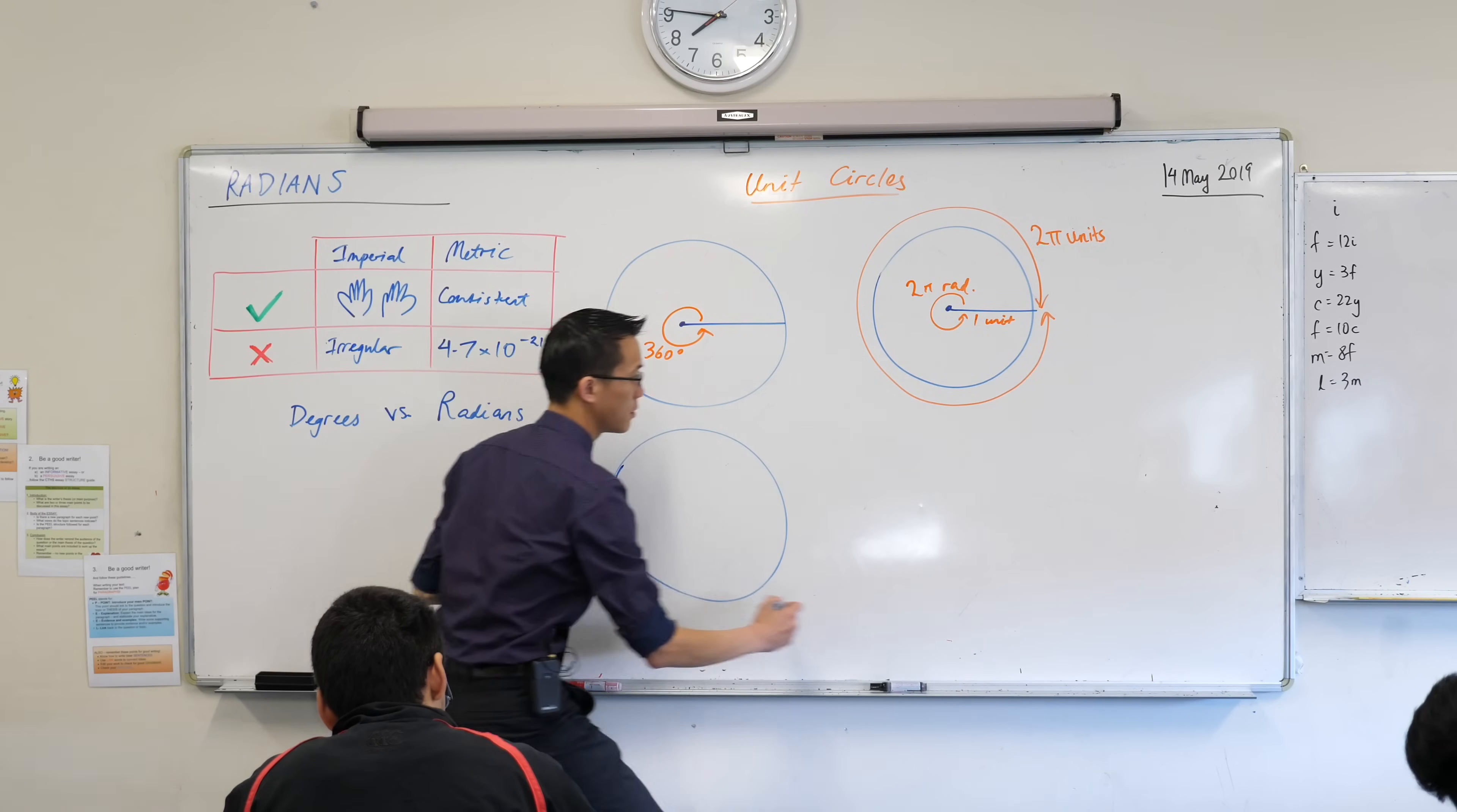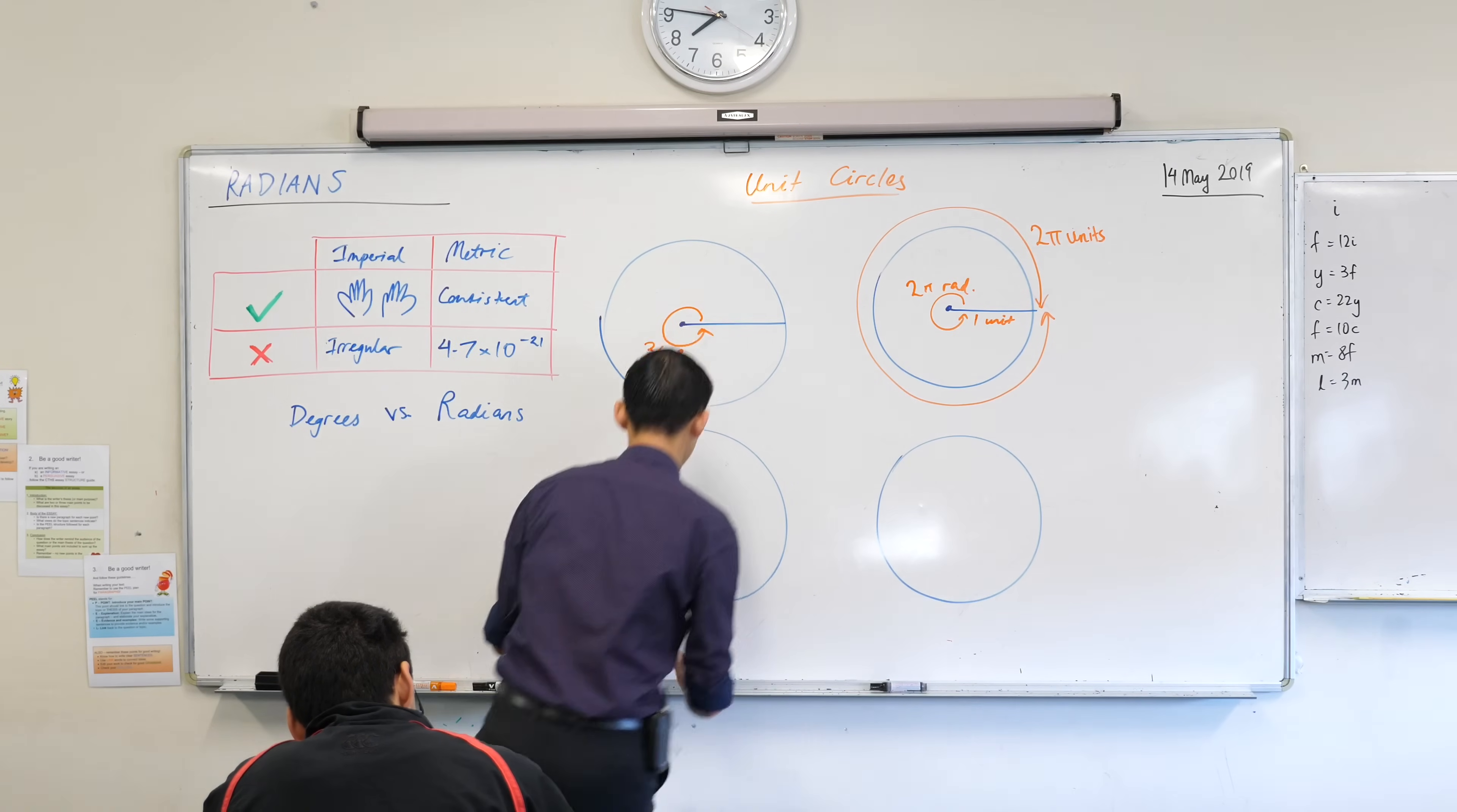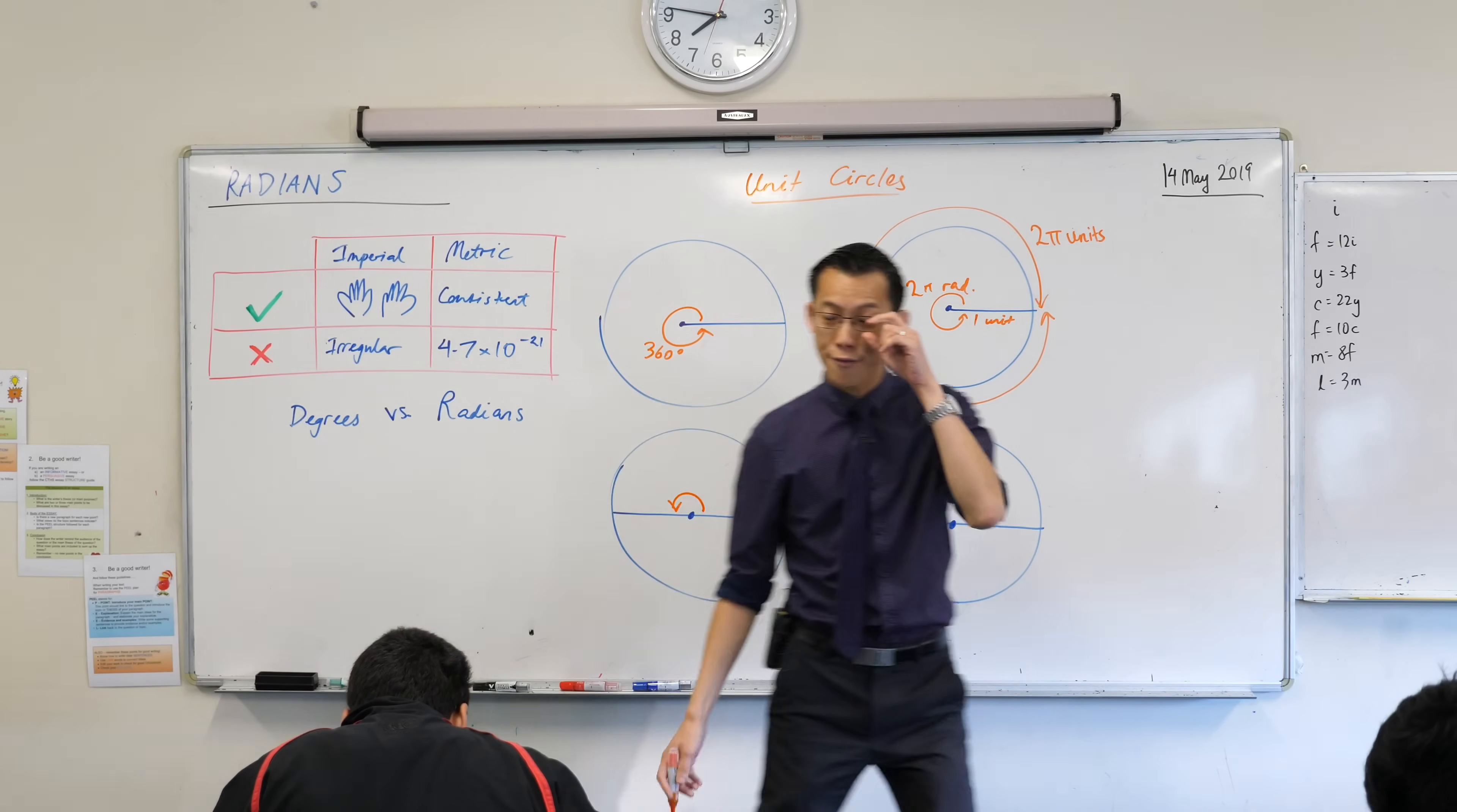Okay, so on this next circle, what I'd like you to draw is not 360 degrees. Can you draw for me an angle that is half a revolution? Can you go ahead and draw that in? You can do it on both. So here's our half revolution.